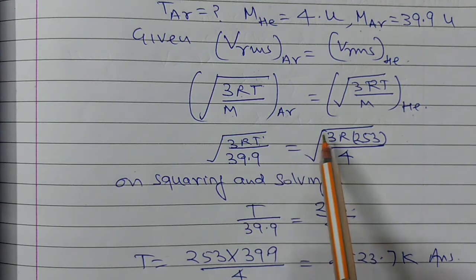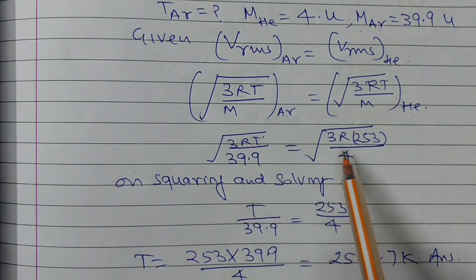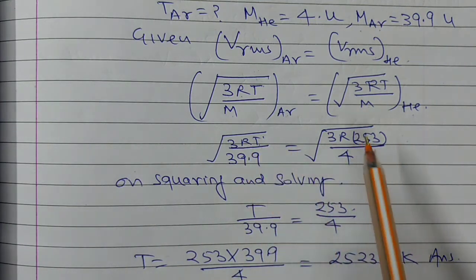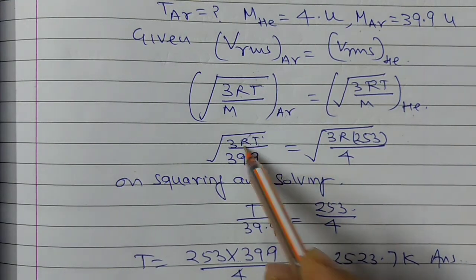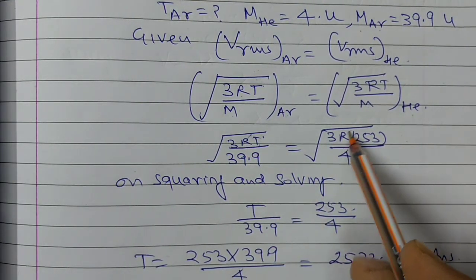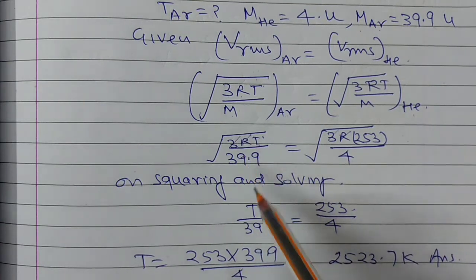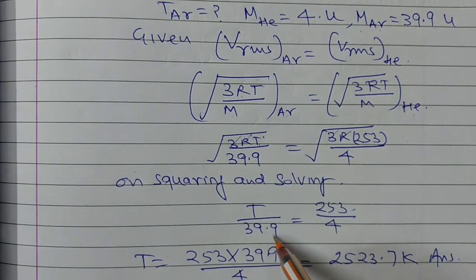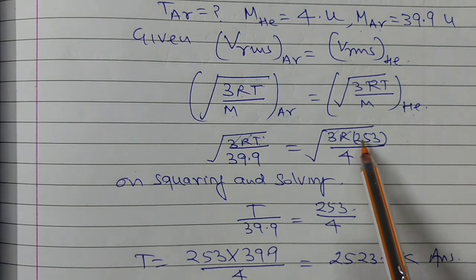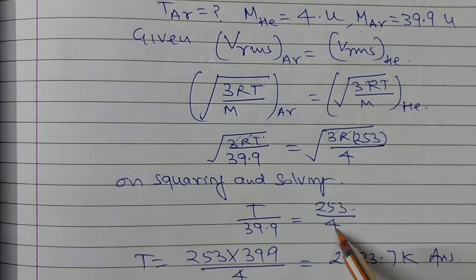Now on squaring and solving both sides, what cancels: R is cancelled, and 3 is also cancelled. Then this is T upon 39.9 equals 253 upon 4.